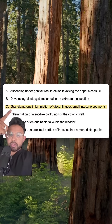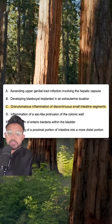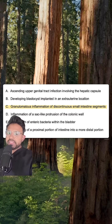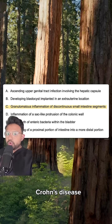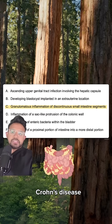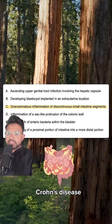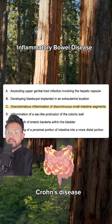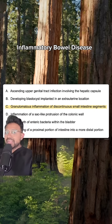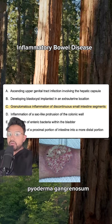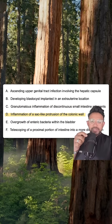Answer choice C: granulomatous inflammation of discontinuous small intestine segments. This is going to be very characteristic of Crohn's disease. Crohn's disease is going to be under the concept of inflammatory bowel disease. Watch for the extraintestinal manifestations such as pyoderma gangrenosum.